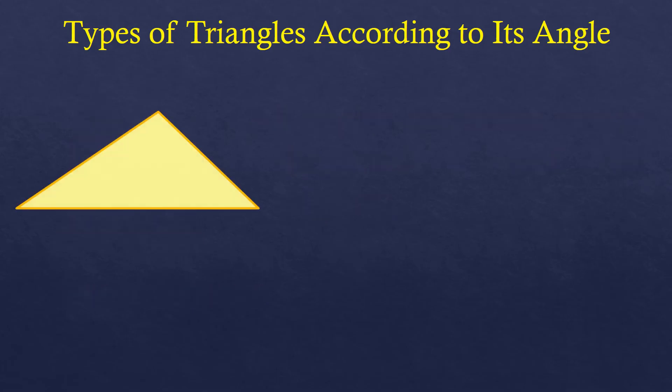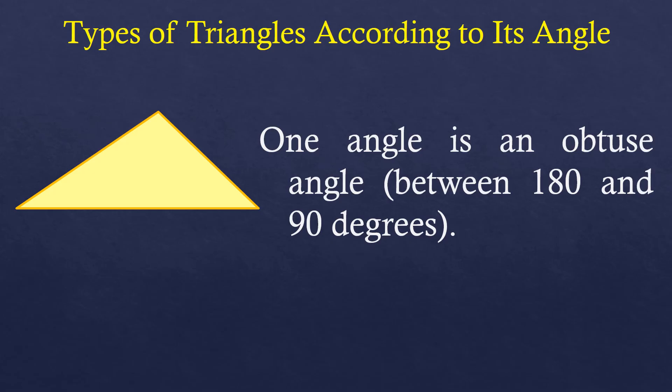Now if it's like this, where one angle is an obtuse angle, meaning between 90 and 180 degrees, which is the one angle on top, we call it an obtuse triangle.